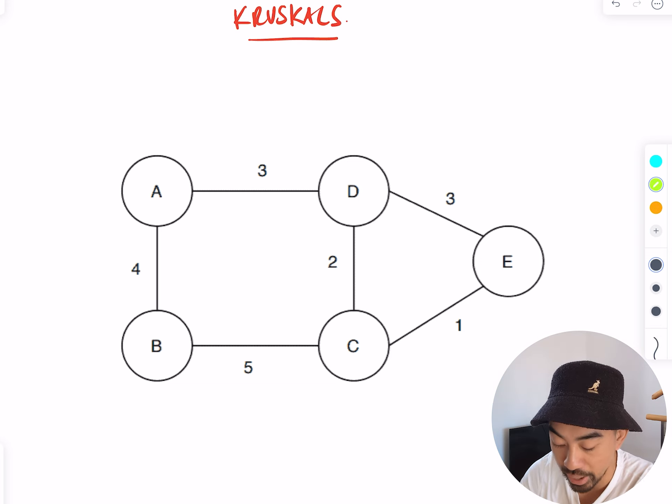What we're going to do is choose the smallest edge to start off with. So here I see one. Your goal is to keep highlighting the smallest edges, whether they're connected to what you already got or not, but just make sure there's no loops.